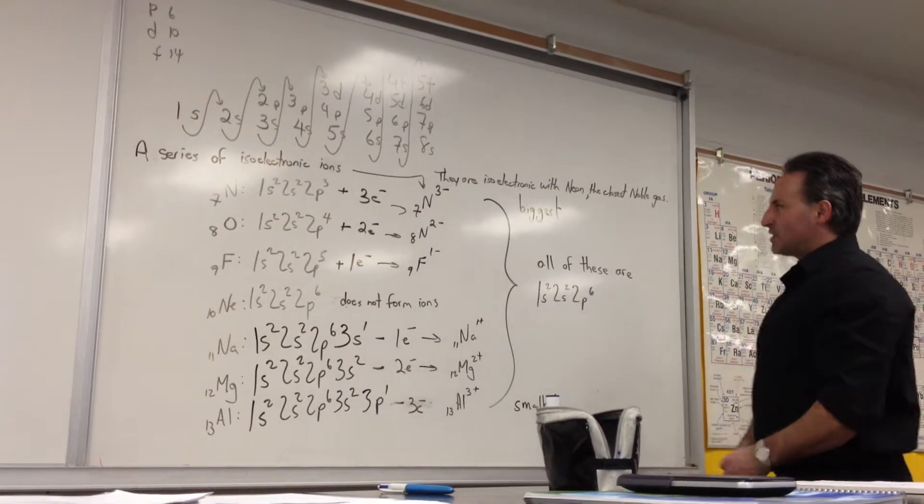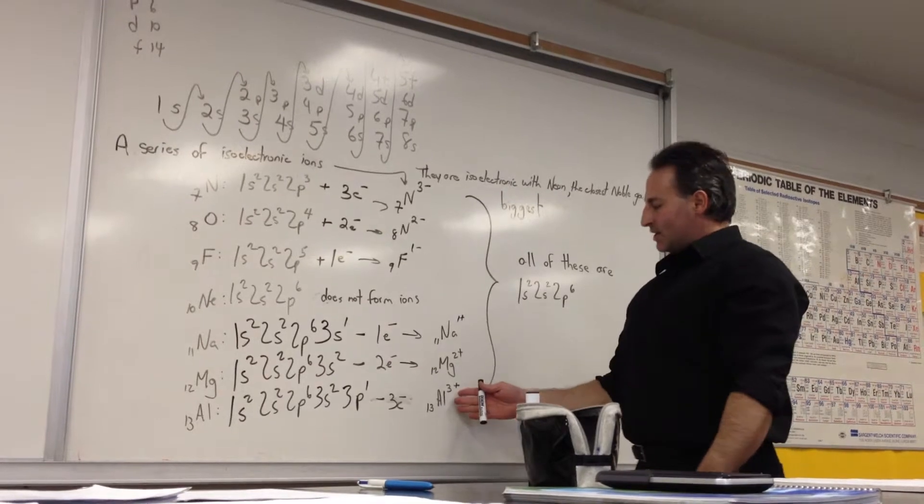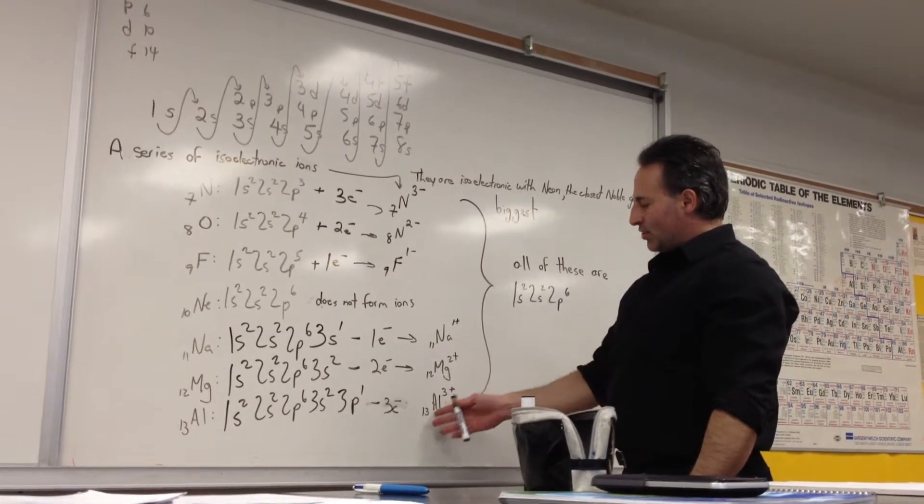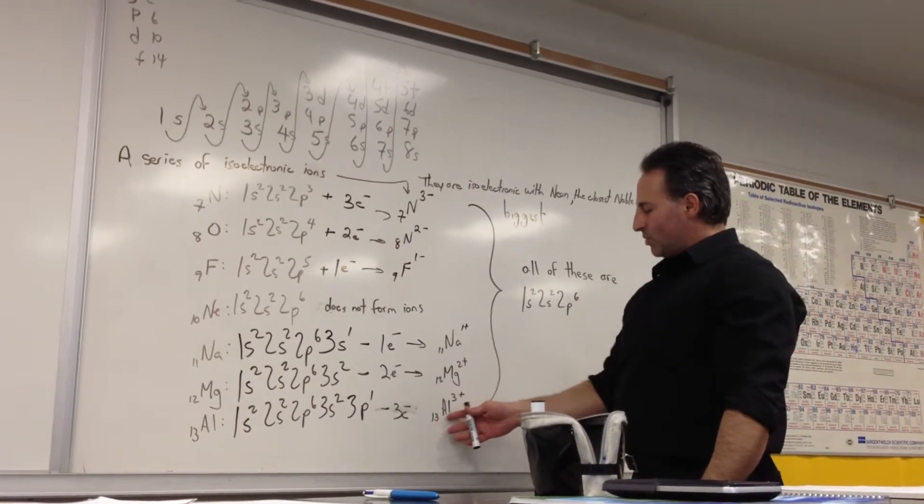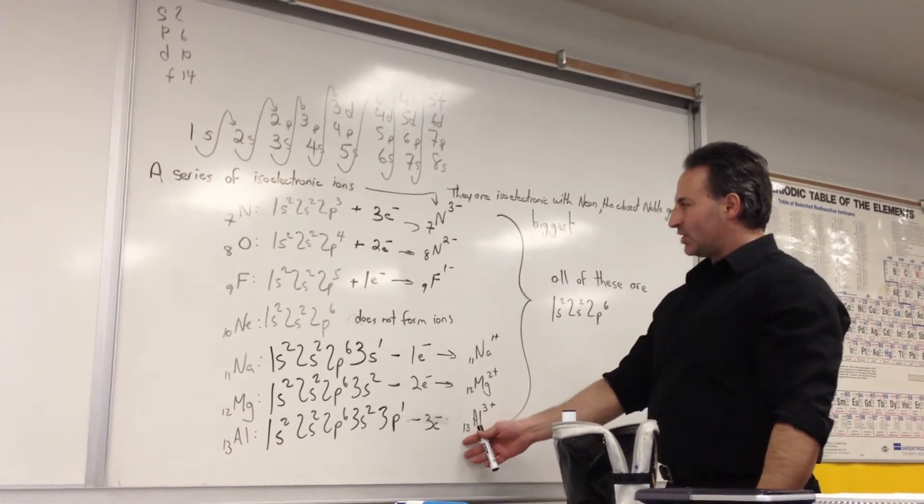Now we can make some considerations about the size of the ions. Aluminum has 13 protons, but when it becomes a cation, it's only got 10 electrons.